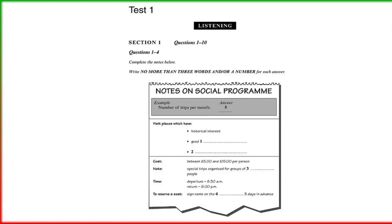We do offer to arrange special trips if there are more than twelve people. What are the times normally? We try to keep it pretty fixed so that students get to know the pattern. We leave at 8.30am and return at 6pm — we figure it's best to keep the day fairly short. How do we reserve a place? You sign your name on the notice board. And we do ask that you sign up three days in advance so we know we've got enough people interested to run it, and we can cancel if necessary with full refund, of course.